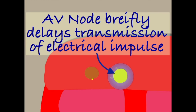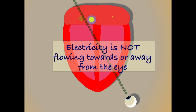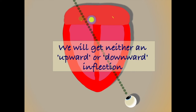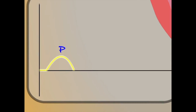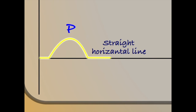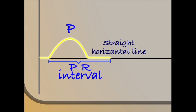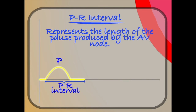The AV node will then briefly pause the flow of electricity to give the atrium time to push its blood down into the ventricles. As the electricity is flowing neither towards nor away from the eye, we will get neither an upward nor downward inflection on our ECG. Instead we will get a straight horizontal line as time passes. We label this the PR interval — it represents how long a pause the AV node causes in the conduction of the electricity.